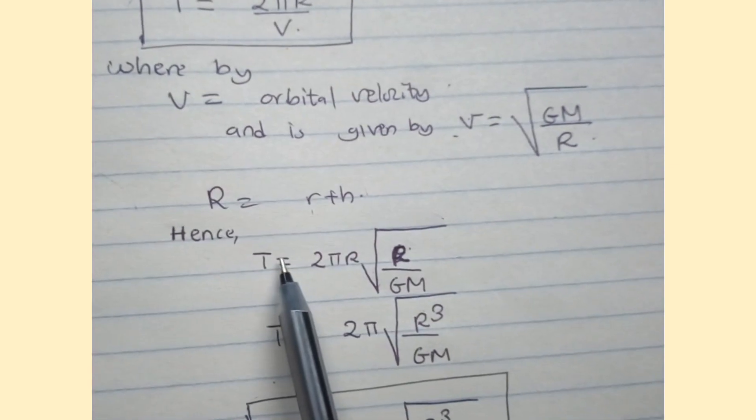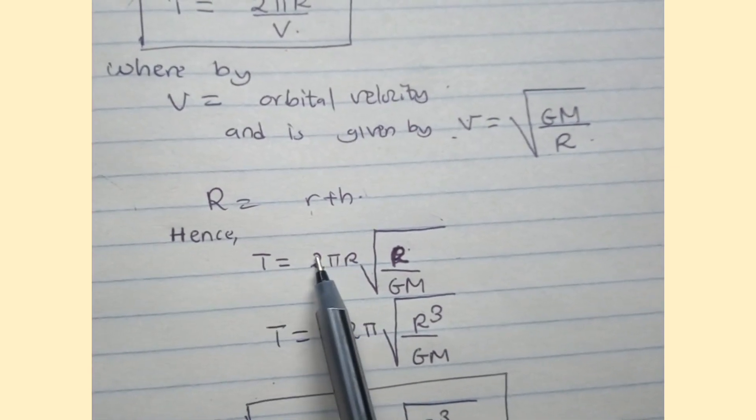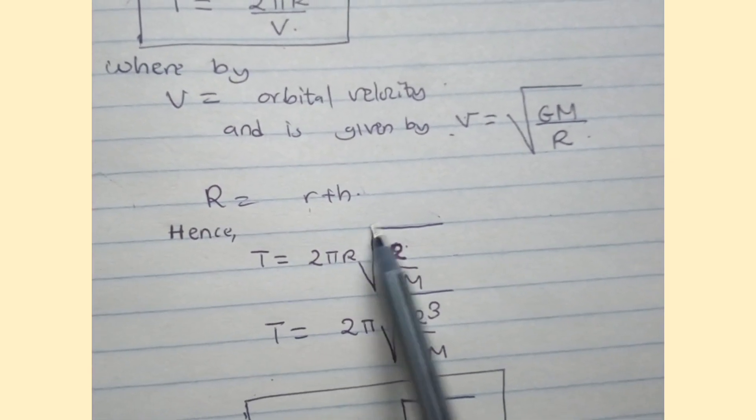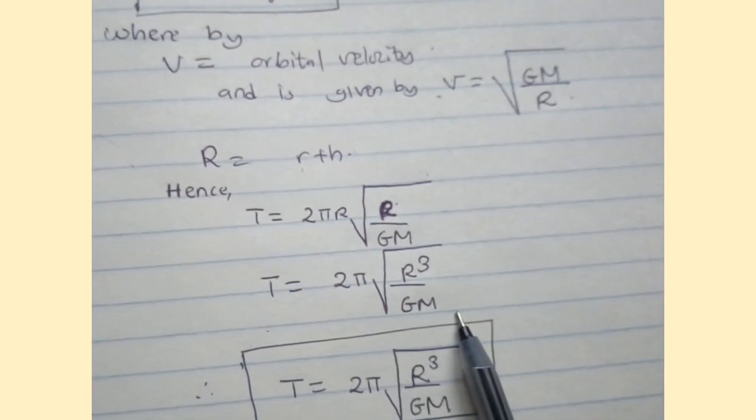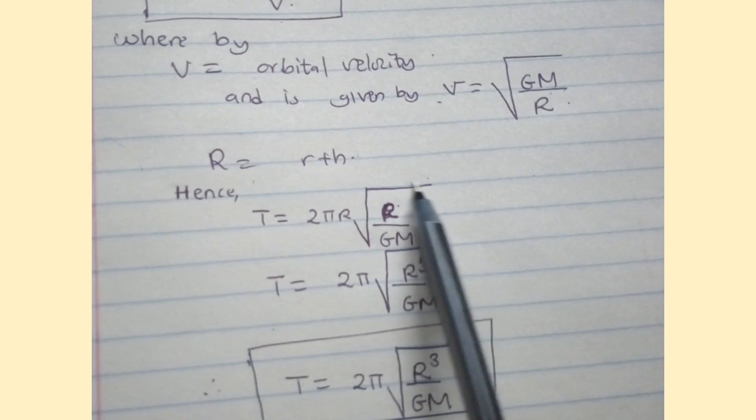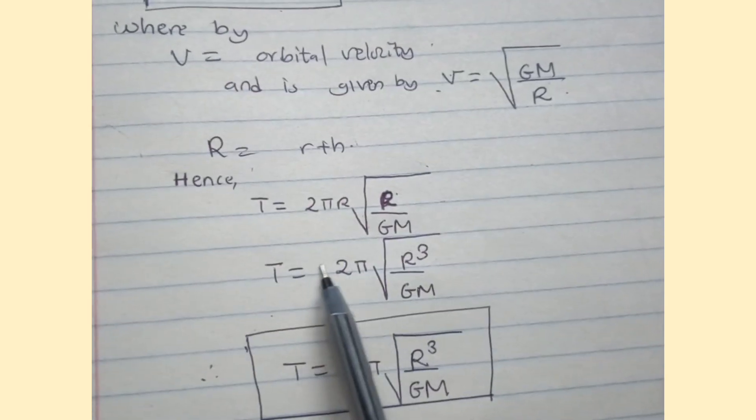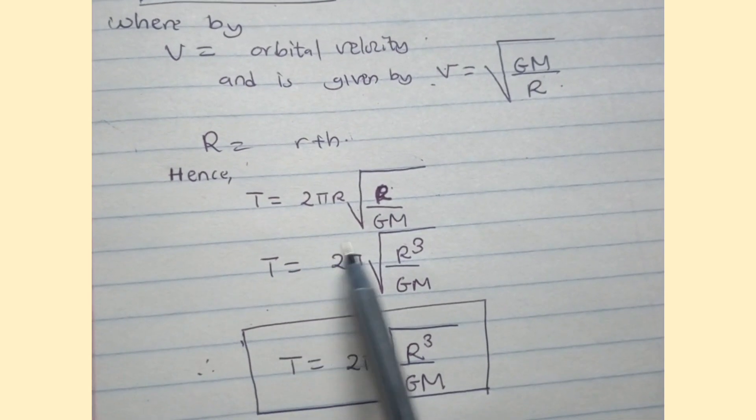The result is T = 2πR divided by square root of GM over R. When you simplify this equation, the result is T = 2π times the square root of R cubed over GM.